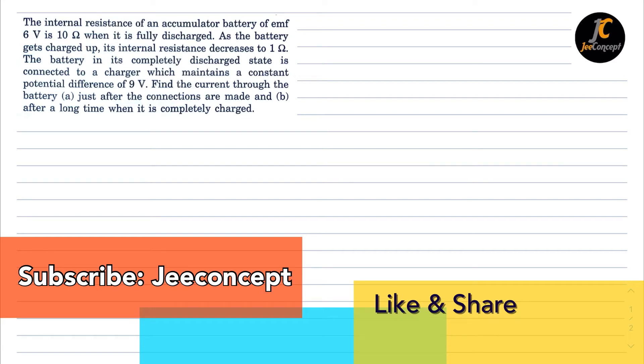Hello everyone, in this question, the internal resistance of an accumulator battery of emf 6 volt is 10 ohm when it is fully discharged. As the battery gets charged up,